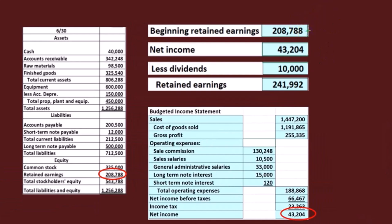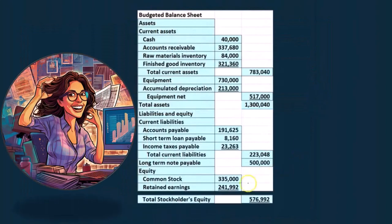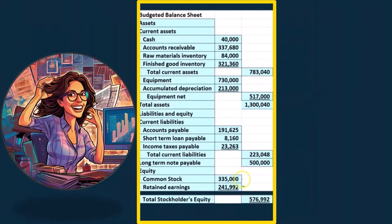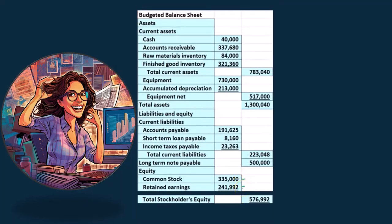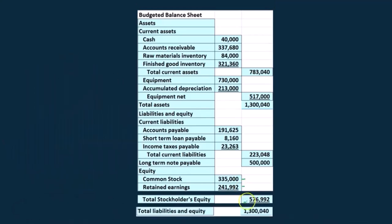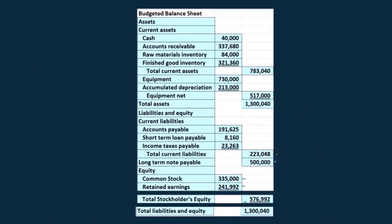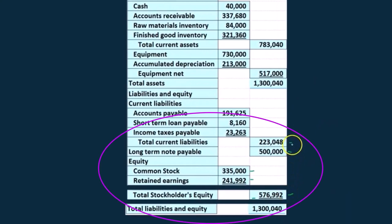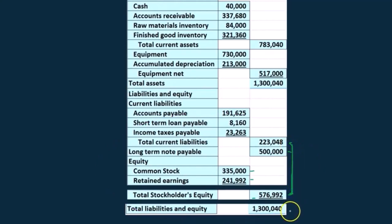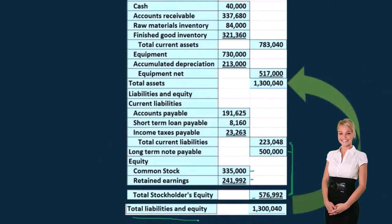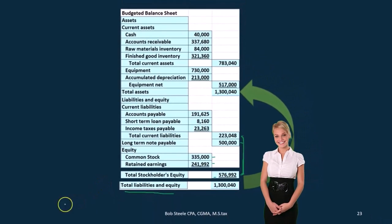We have beginning retained earnings of $208,788, plus net income of $43,204, minus $10,000 in dividends, giving us ending retained earnings of $241,992. Total stockholders' equity is $335,000 plus $241,992, equaling $576,992. Adding total current liabilities, the long-term note, and total equity gives us total liabilities and equity of $1,300,040 — which equals our total assets. Our budgeted balance sheet is in balance.